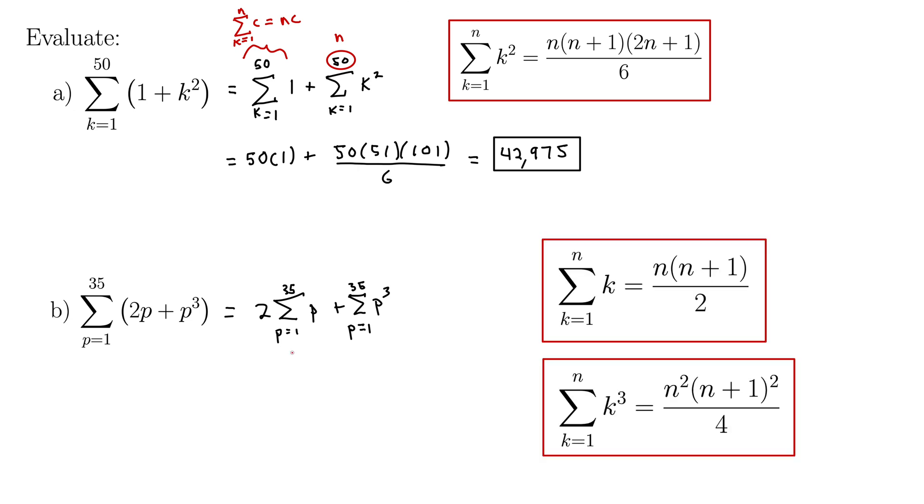So here they are. So when we just have p, or in this case k, it becomes n times n plus 1 all over 2. So this first sum becomes, we still have the 2 hanging out here. Remember, our n is our 35. This here is n, so we have 2 times 35 times 35 plus 1 is 36, all over 2.